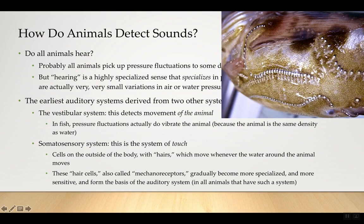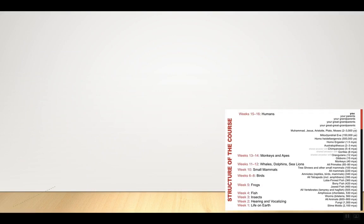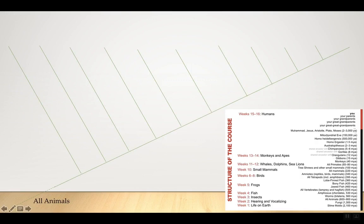Here is a cladistic diagram looking at hearing and vocalizations through evolutionary time, structured from a human-centric perspective. All animals are shown here, with earlier time on the left. Bilateria are bilateral animals — pretty much everything except sponges and jellyfish, from more than 500 million years ago. Insects diverge on one side; vertebrates on the other. We'll look at insects in week three, then vertebrates. Lampreys represent what we were probably like around 450 million years ago. Then all other vertebrates with jaws developed, including those with cartilaginous skeletons like sharks and rays, and bony vertebrates — bony fish.